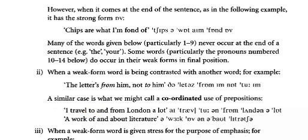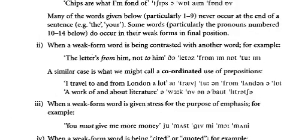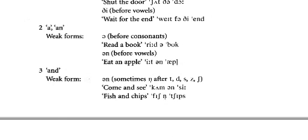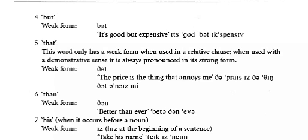In a coordinated structure, like 'I travel to and from London a lot', both prepositions are highlighted. Similarly, 'I work about literature' draws attention to the word 'about'. When a weak form word is given stress for emphasis — like 'You must give me more money' — we try to minimize emphasis on 'must' in its weak form.